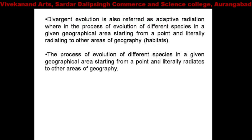Divergent evolution is also called adaptive radiation. The adaptive radiation term was observed — at that time there was a similar set of species in a given geographical area, starting from a point and radiating to other areas of geography.